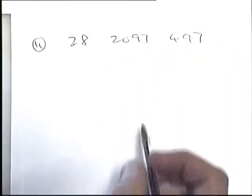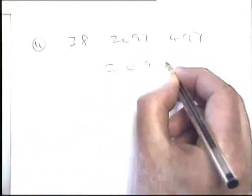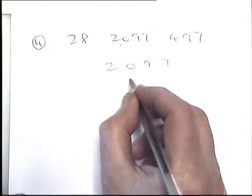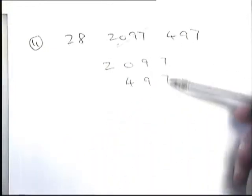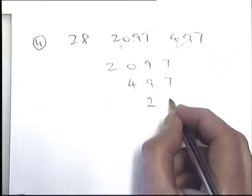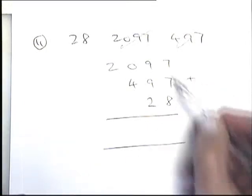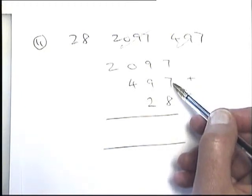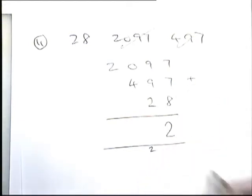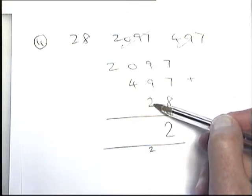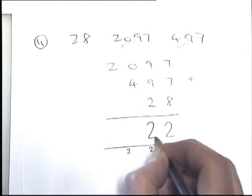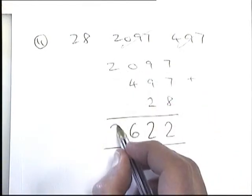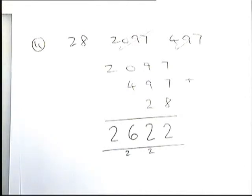When adding it's useful to start with the biggest number first — 2097. Don't crowd the numbers; give space, then write 497 underneath lined up on the right, then 28. Adding the columns: 7+7+8=22; carry 2, then 9+9+2+2=22; carry 2, then 0+4+2=6; and 2 gives 2622. The answer is two thousand six hundred and twenty-two.